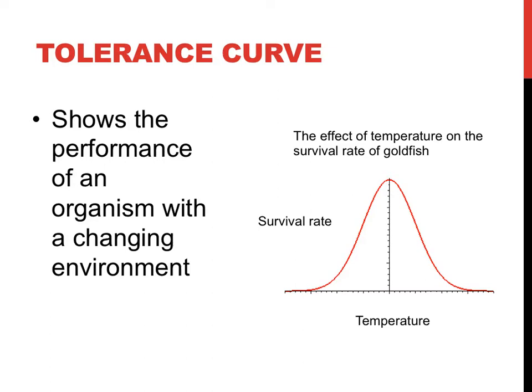A tolerance curve is a graphic depiction of how well an organism can survive across a range of environmental conditions. In tolerance curves, as shown on the right, the range of environmental conditions — the independent variable — is shown on the x-axis, while the survival rate — the measured or dependent variable — is shown on the y-axis. A tolerance curve typically appears like a bell curve, where survival is lower with extreme conditions and is best right in the middle at the optimal condition.